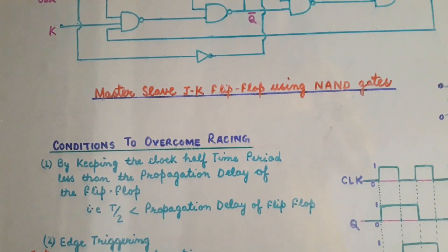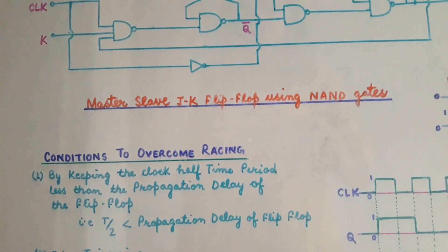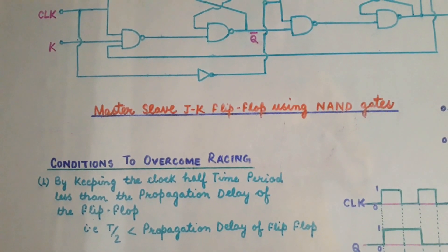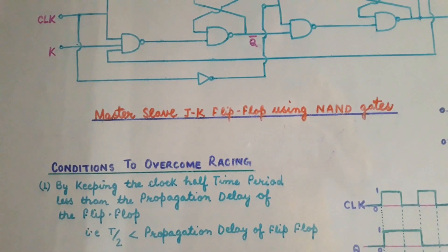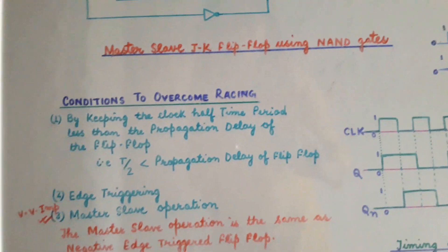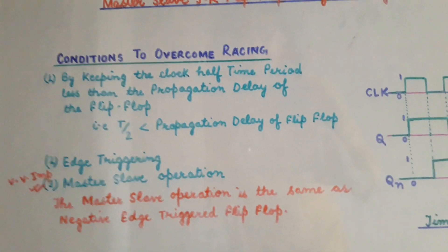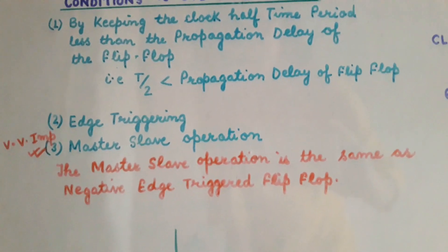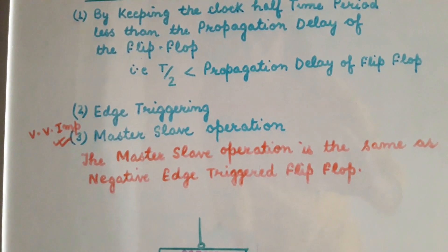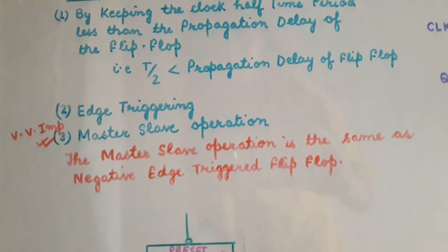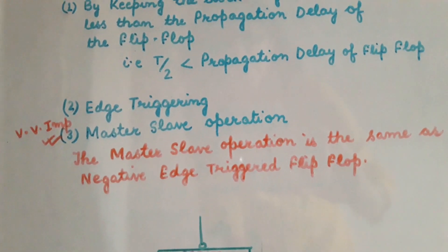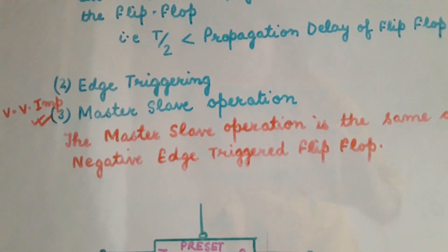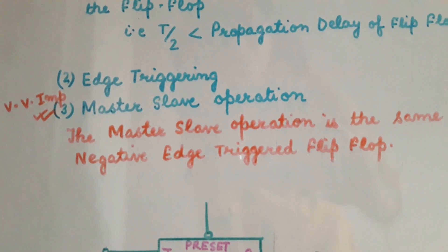Let capital T be the time period of the clock, so the value of T/2 should be less than the propagation delay of the flip-flop. But practically we don't use this method to overcome racing. The next method is edge triggering — by using edge triggering we can overcome the problem of racing. The third and most important method is the master-slave operation, which is the same as the negative edge triggered flip-flop.